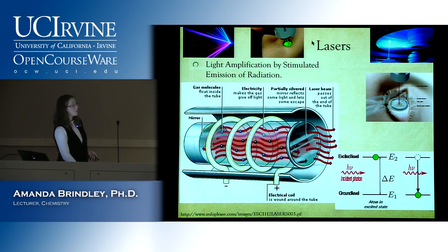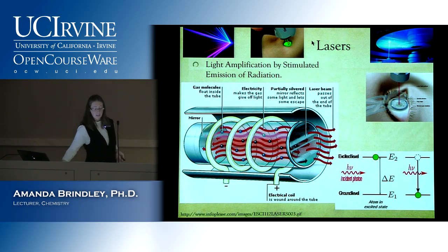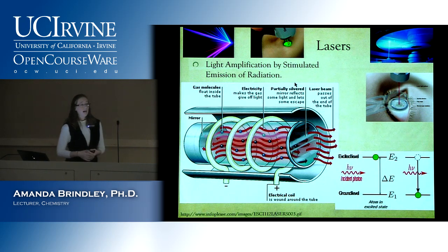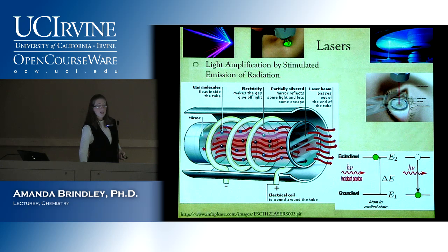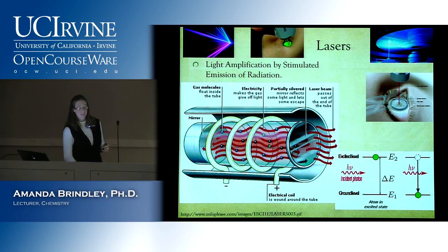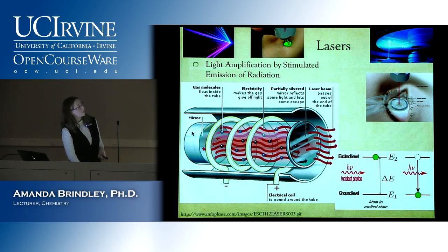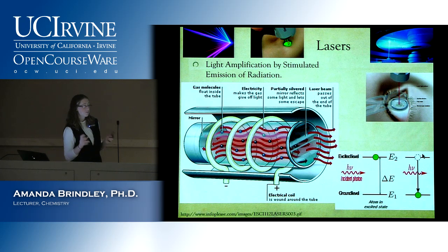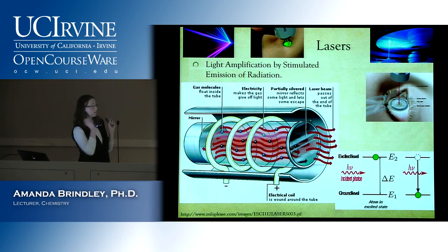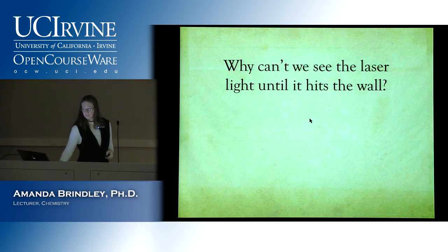Some of the light passes through a partially mirrored end, giving you your laser beam. All of it is coherent — at the exact same wavelength, or very close. When you point a laser, you can't see the beam between source and wall — you only see it when it hits something. This is why lasers make great cat toys: the cat never knows where they're coming from.